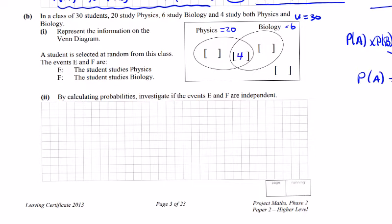This is a Venn diagram question: leaving 2 and 16, with 22 inside the circles, which leaves 8. By calculating probabilities, investigate if E and F are independent. Well, if they're independent, the probability of E times the probability of F equals the probability of E intersection F.